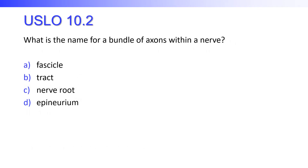What is the name for a bundle of axons within a nerve? Is it a fascicle, a tract, a nerve root, or epineurium? The way a nerve is put together is very much like a muscle cell — a bundle in a muscle cell is called a fascicle, and the same is true in a nerve. A bundle of fibers such as axons is also called a fascicle in the case of a nerve.